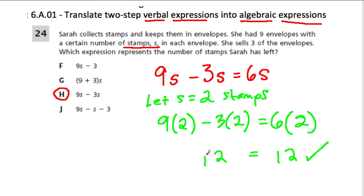If it didn't work, let's try a different one. Let's try J. J says nine S minus S minus three. So nine envelopes with a certain number of stamps. Maybe if we took away one envelope, one S, and then took three away of something, this would make sense. But I think we'll see here that this doesn't really work. If S was two, so we had two stamps, we have nine times two minus two minus three, which is 18 minus two. That's 16, minus three is 13 stamps. Let's think of that if that makes sense.